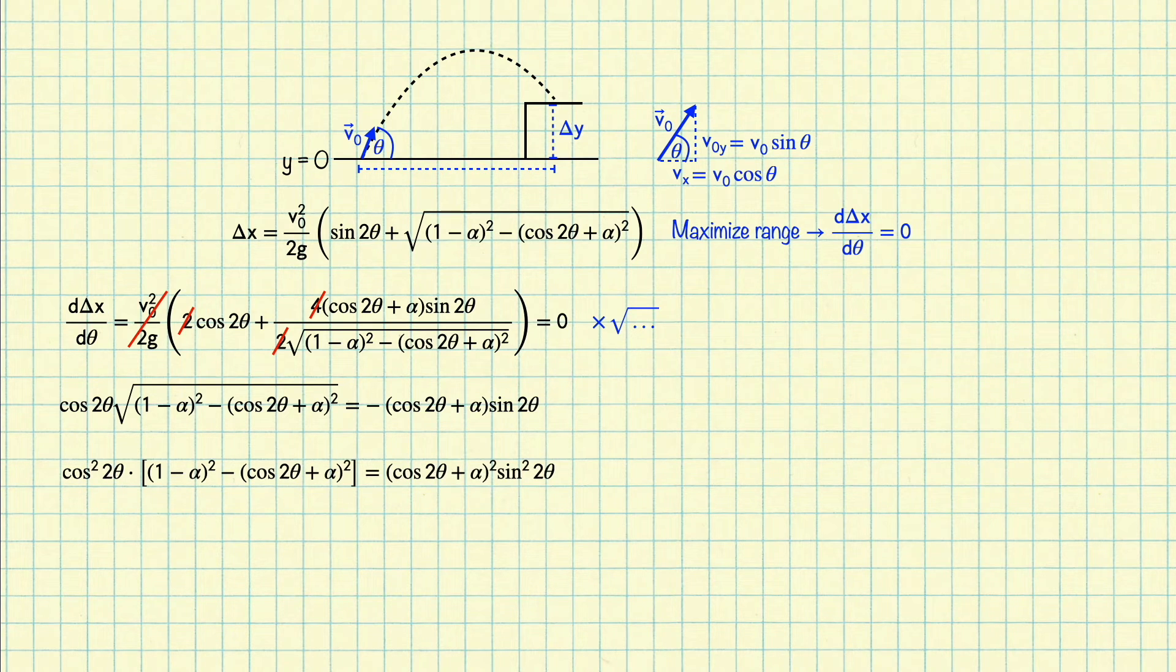Now notice that on both sides of the equation I have a term proportional to cosine 2 theta plus alpha quantity squared. I'm going to group those two together on the right-hand side of the equation, and it turns out this factors out quite nicely to sine squared 2 theta plus cosine squared 2 theta, which is equal to 1. Now every term on both sides of the equation is squared, so I can take the square root, remembering that I have positive and negative solutions here.